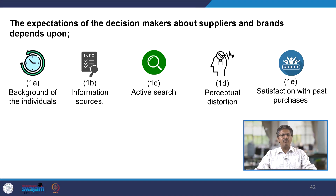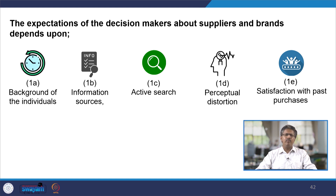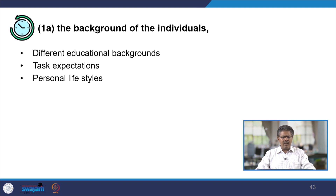The second point is information sources — what kind of information is available to us. The third point is active search. The fourth point is perceptual distortion — whatever information you have got, how do you perceive it? Sometimes four people get the same information and all four may be perceiving it very differently, depending on what kind of image or impression you carry in your mind. And the last point is satisfaction with past purchases.